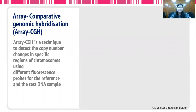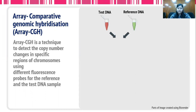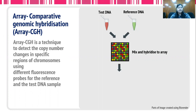Another technique of higher resolution is array CGH, which is a technique to detect copy number changes in specific regions of the chromosome. Under this technique, the test DNA of the patient is differentially colored as compared to the control DNA, and then both of these differentially colored DNAs are mixed together and allowed to hybridize to an array.